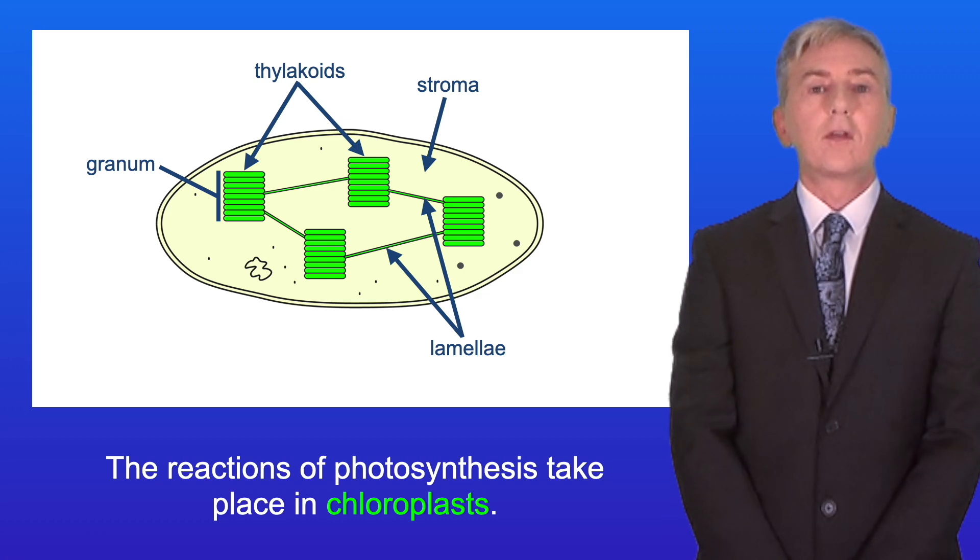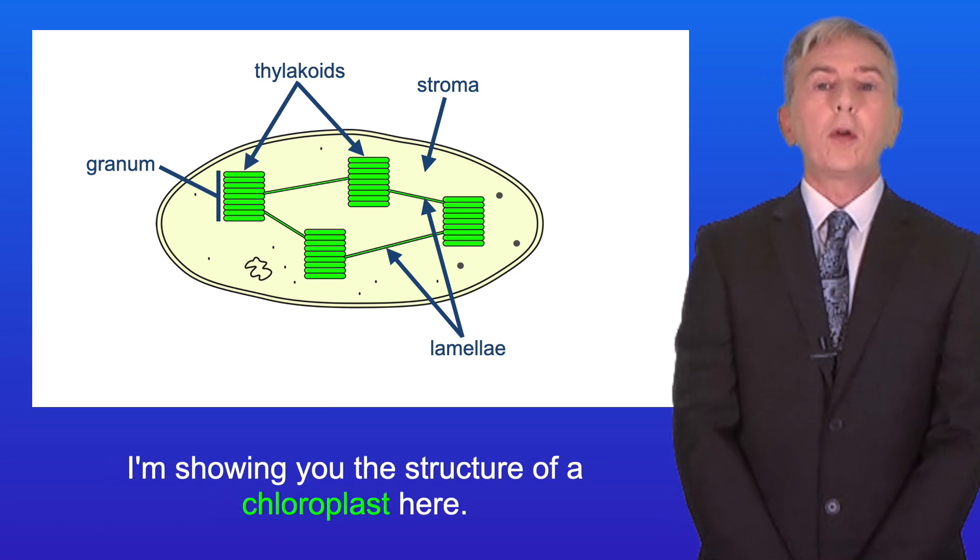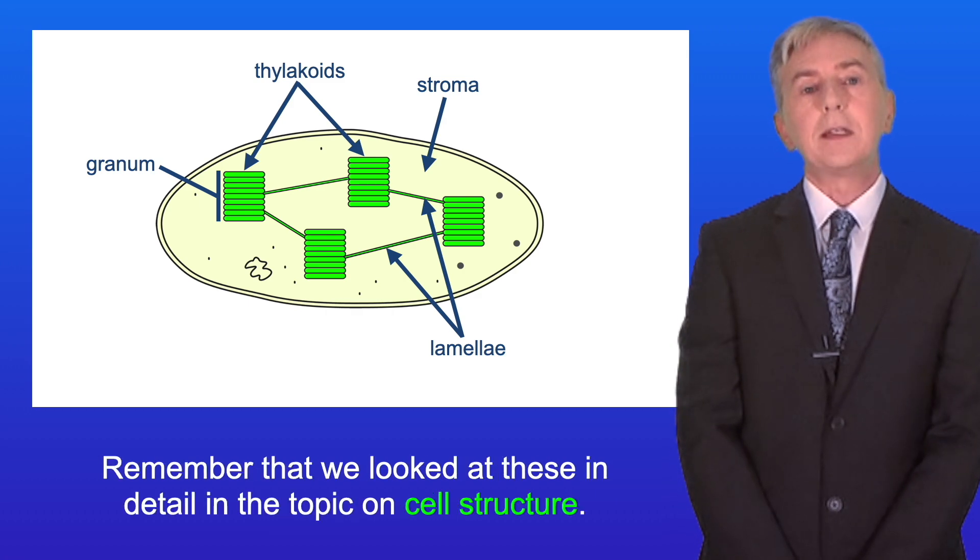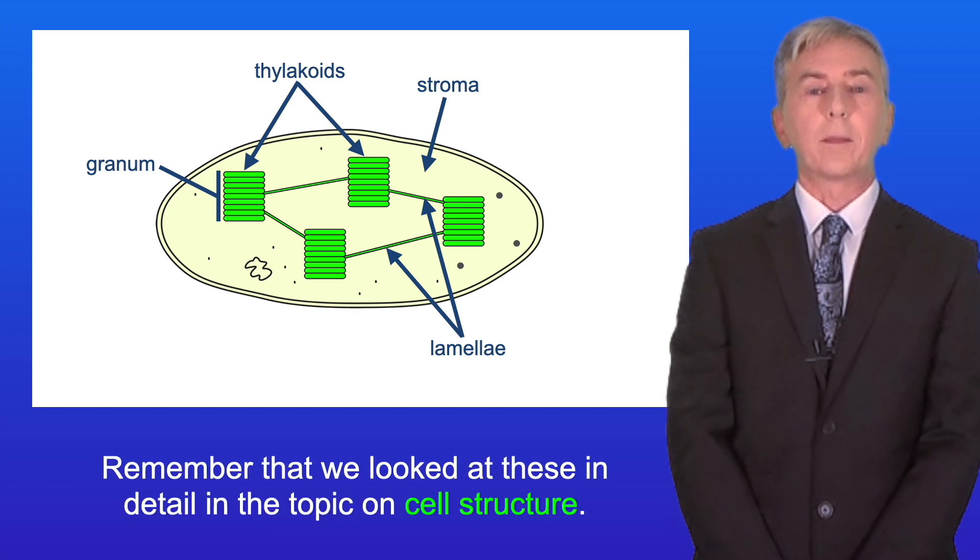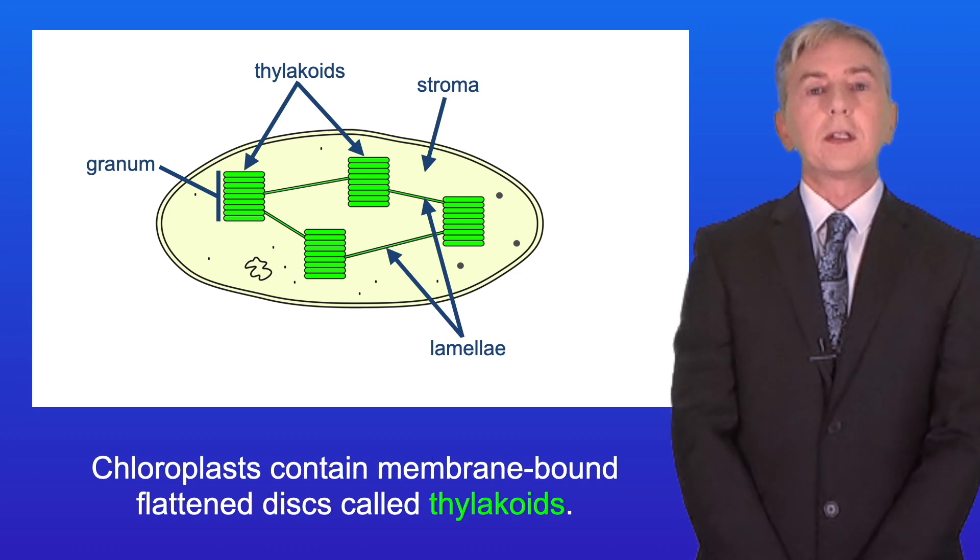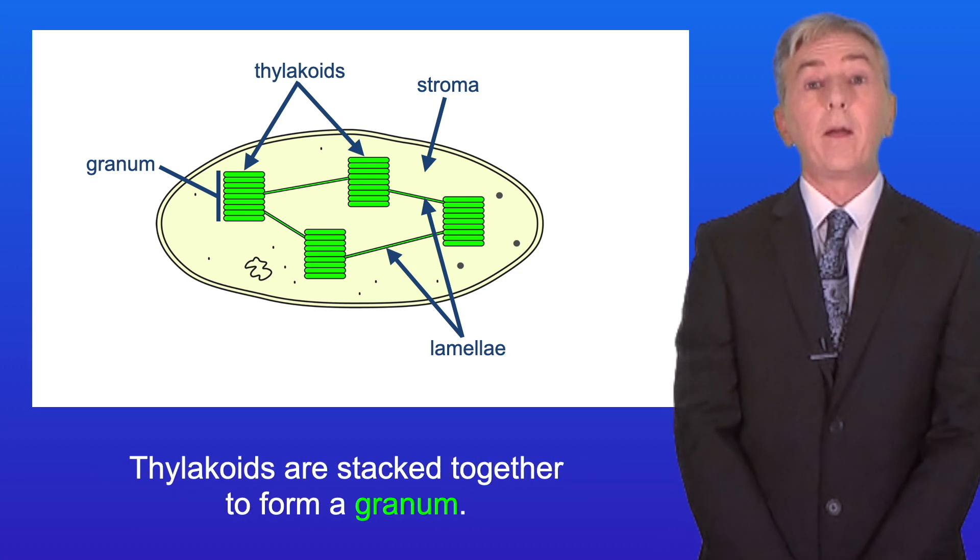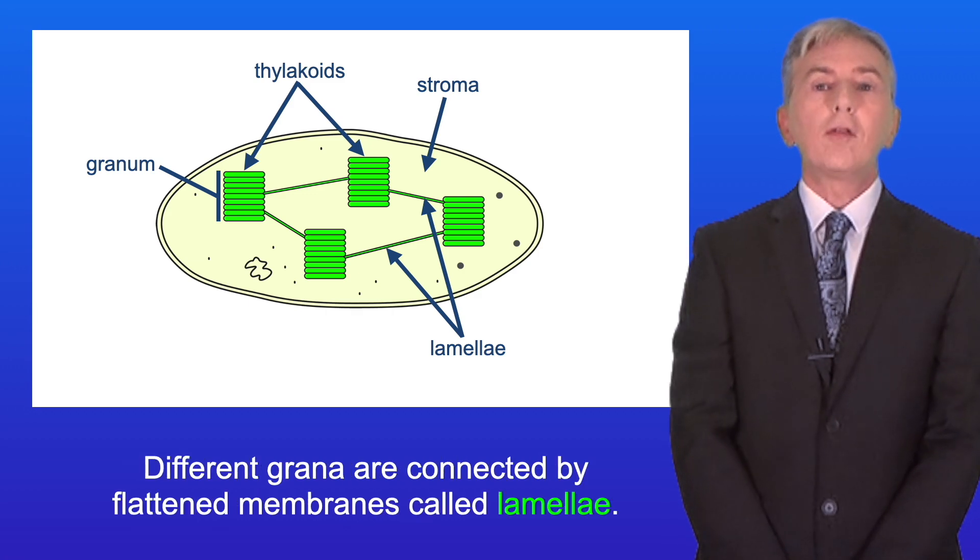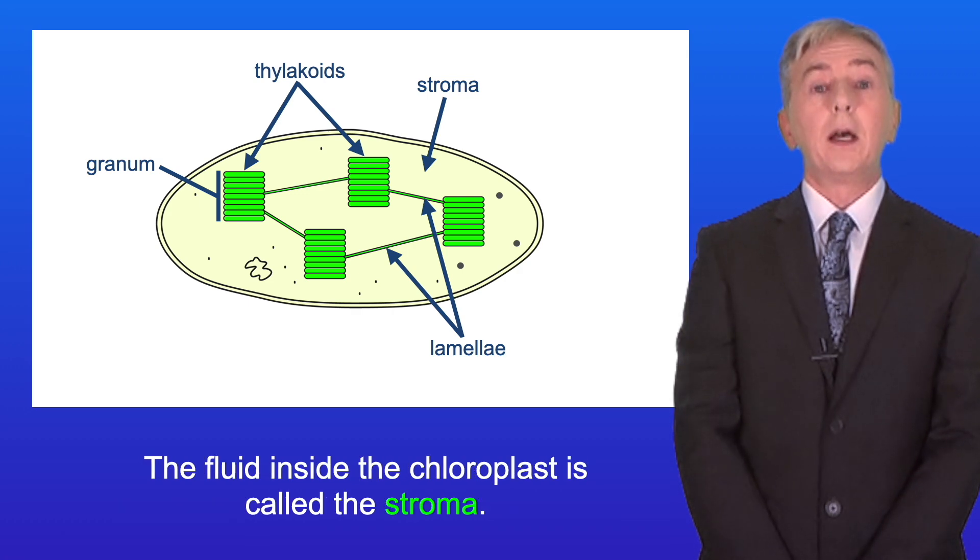The reactions of photosynthesis take place in chloroplasts. I'm showing you the structure of a chloroplast here, and remember that we looked at these in detail in the topic on cell structure. Chloroplasts contain membrane-bound flattened discs called thylakoids, and thylakoids are stacked together to form a granum. Different grana are connected by flattened membranes called lamellae, and the fluid inside the chloroplast is called the stroma.